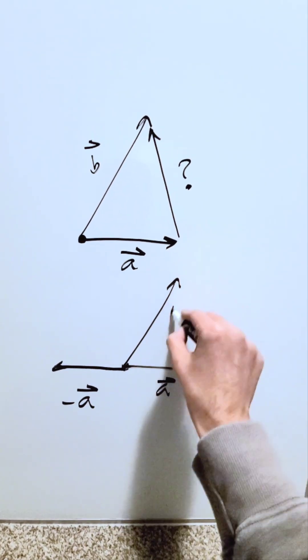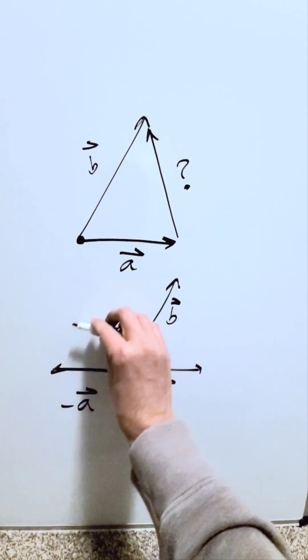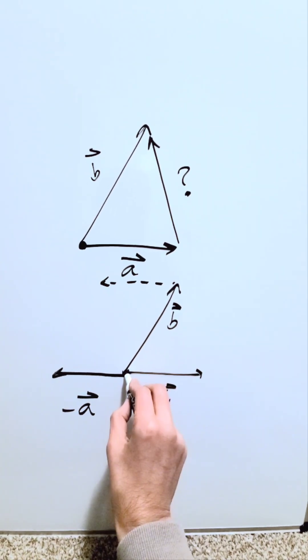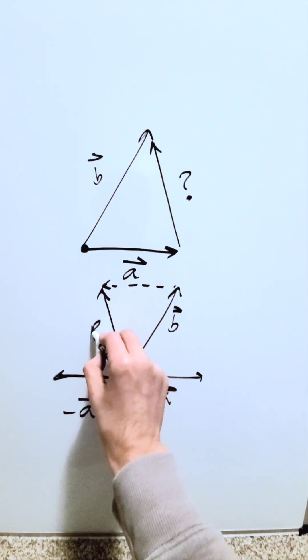I'm drawing b as I see it. I'll translate the minus a, it'll come across over here. I'll connect this origination point to this, and this here is my resultant.